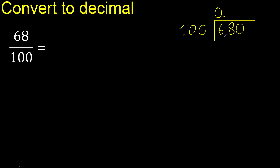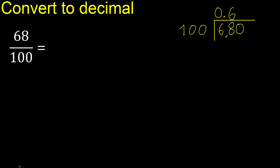Point only once. 680 is not less, therefore: 100 multiplied by which number is nearest to 680 but not greater? Multiplied by 7 is greater, therefore multiplied by 6 is 600. Subtract: remainder is 80. There is no number, therefore complete.